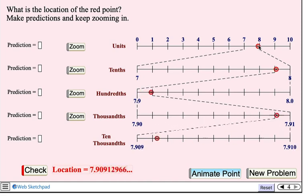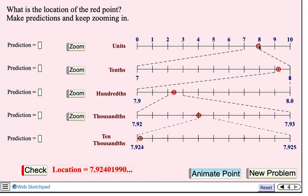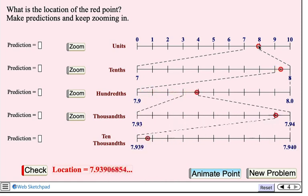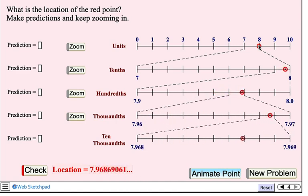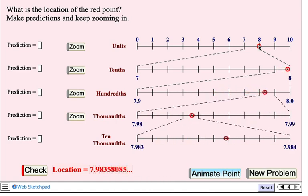So this describes both the zooming integers activity and the zooming decimals activity, both which are part of the dynamic number project.